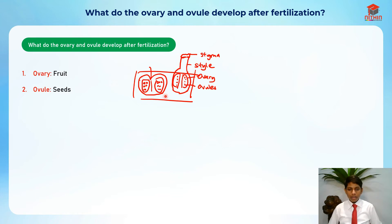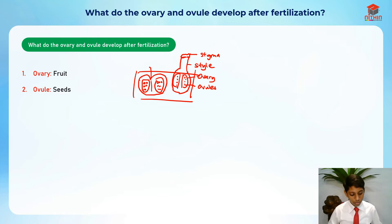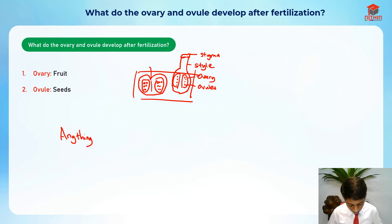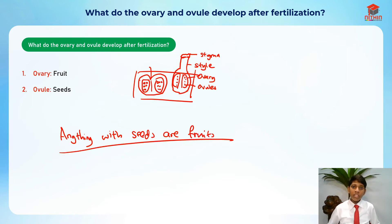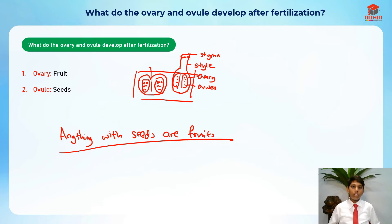The tomato is actually a fruit, not a vegetable. Many people get confused about this. The rule is: everything with seeds is a fruit. So lady's finger, for example — does it have seeds? Yes, it does, which means lady's finger is actually a fruit, even though most people think it's a vegetable.